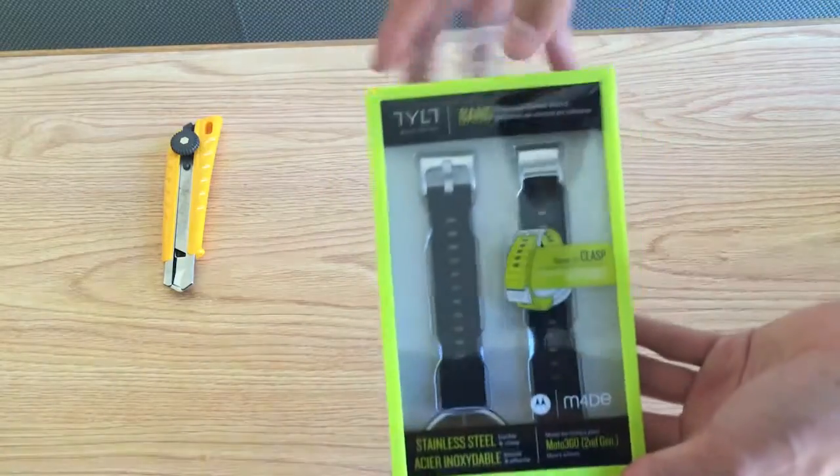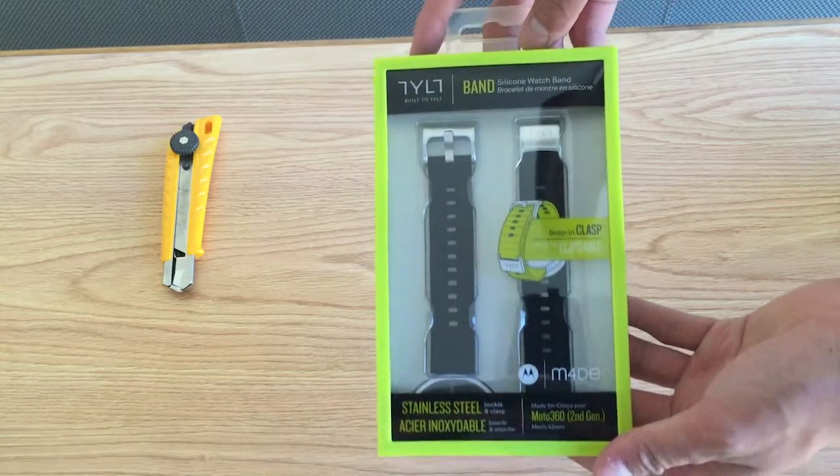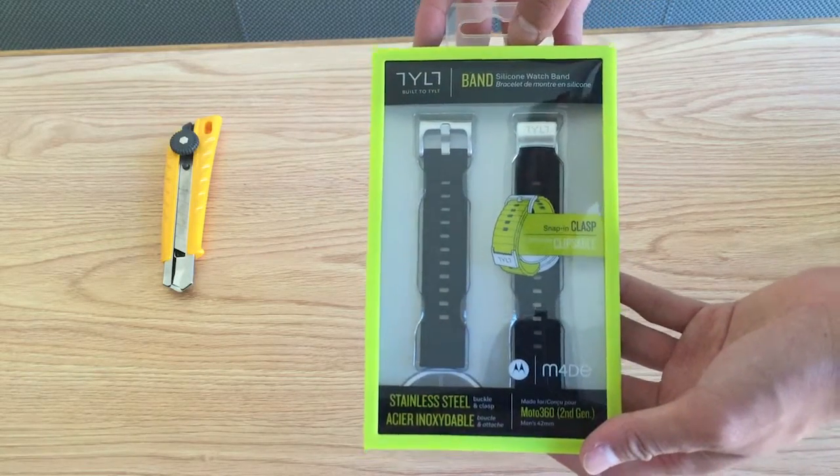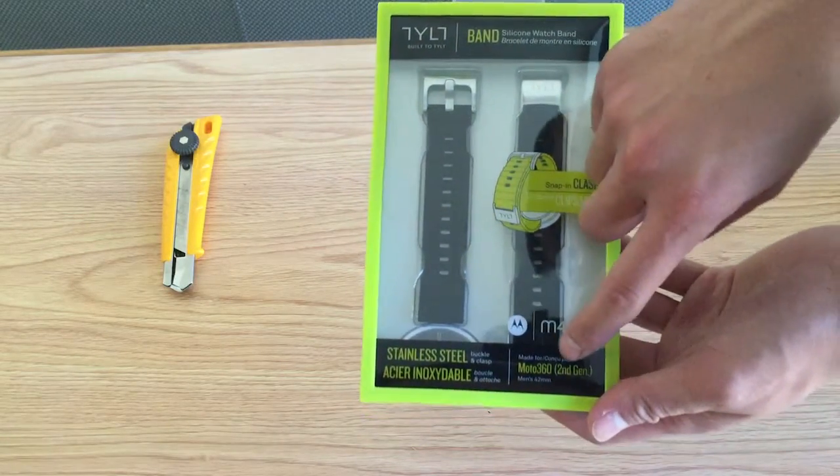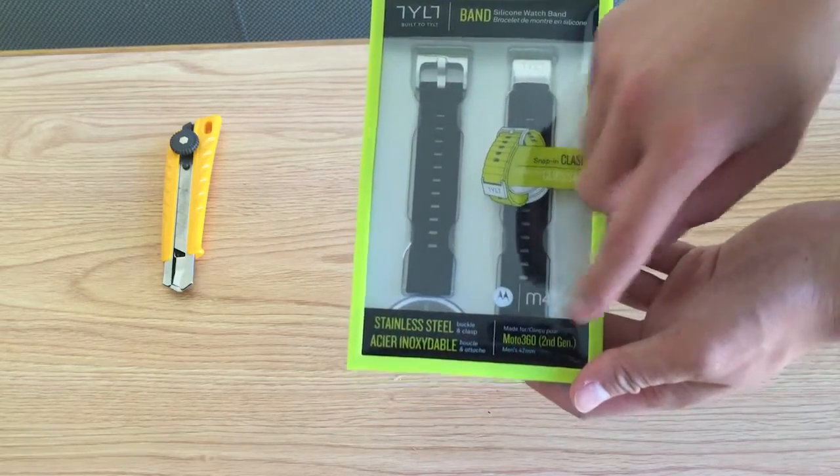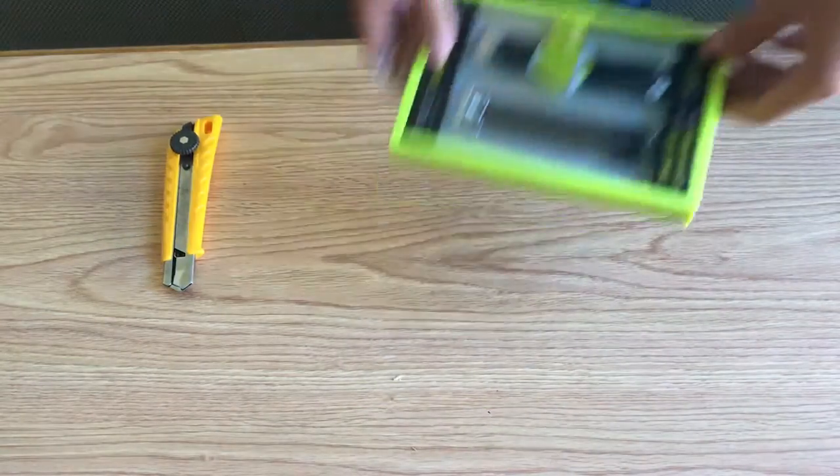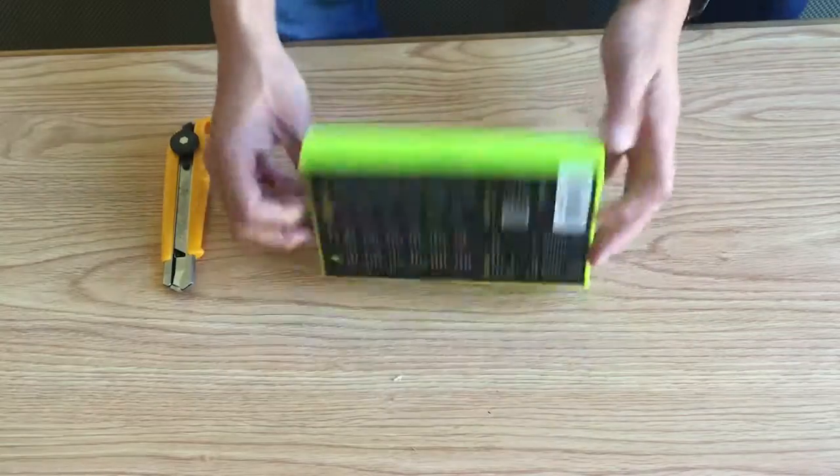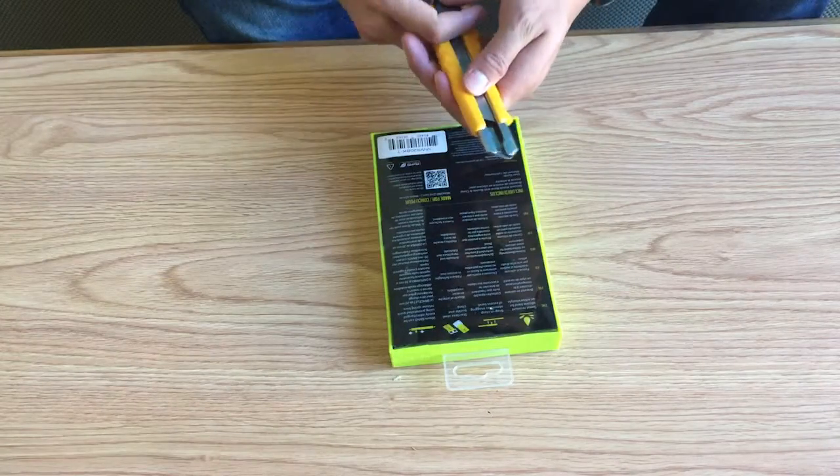Alright, so here's the packaging right here. It's just the tilt Athletic silicone band for the Moto 360 second generation as you can see right here for the men's 42 millimeter. So let me cut into it and see what it's all about.